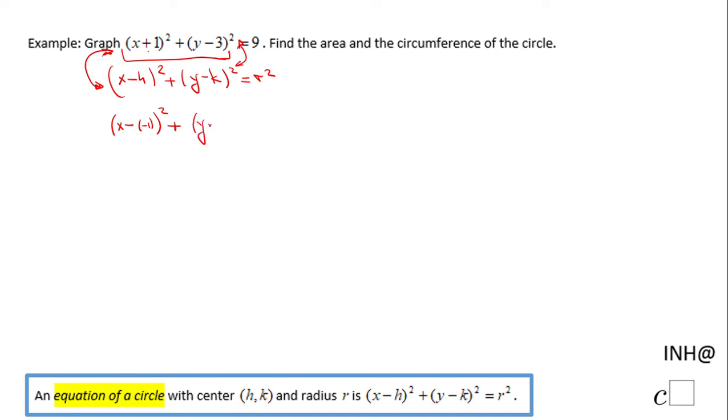That equals 9. Now we can look and match h and k in the two equations. If you take a look, this h is negative 1, and this k is positive 3. That is the center of the circle, C(-1, 3).